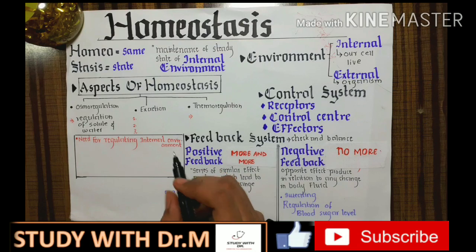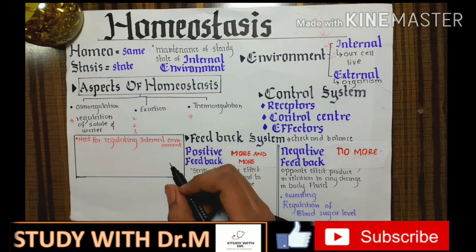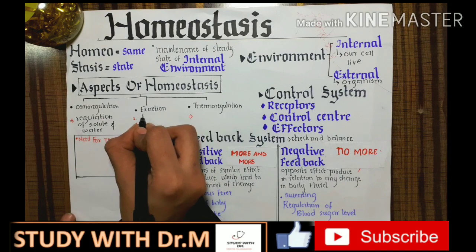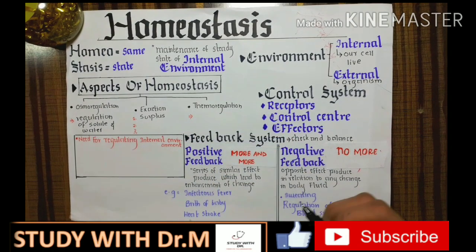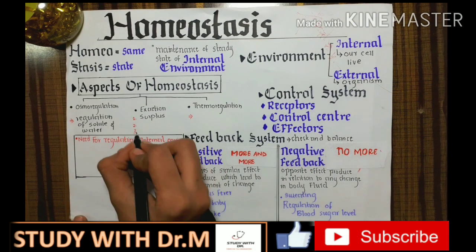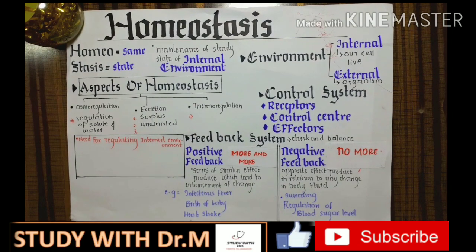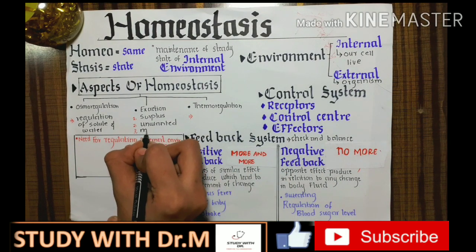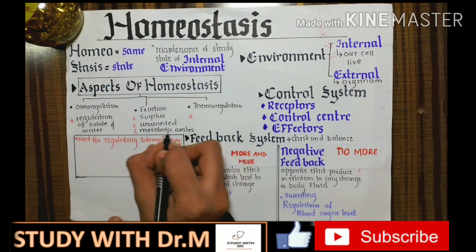What is excretion? For excretion, just remember three words: surplus, unwanted, and metabolic waste. Surplus means our body has more than it needs — for example, when water is in excess, it is excreted in urine. Unwanted means something we eat that is not a requirement of our body, so the body excretes it. Metabolic waste refers to all waste products produced in metabolic reactions.